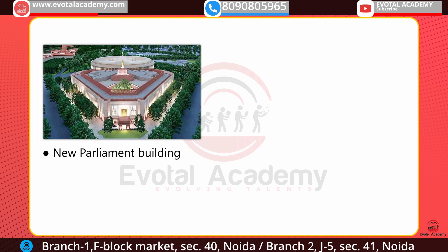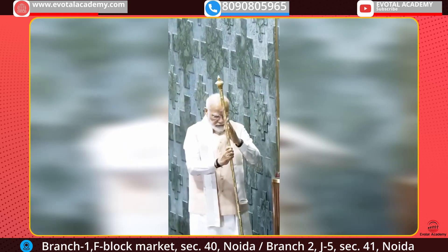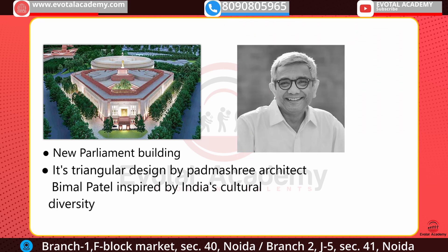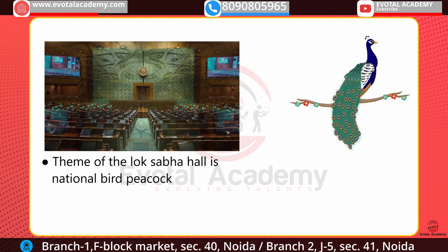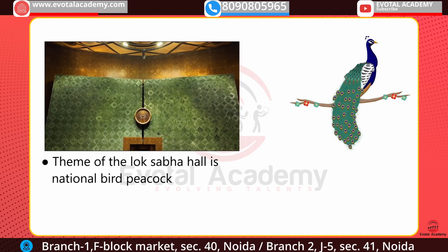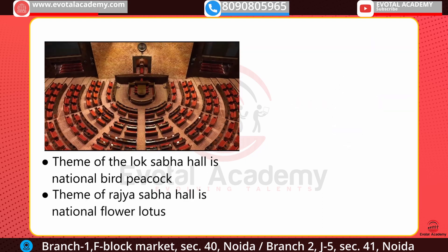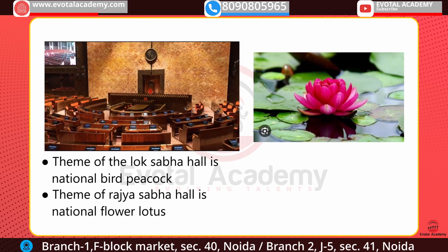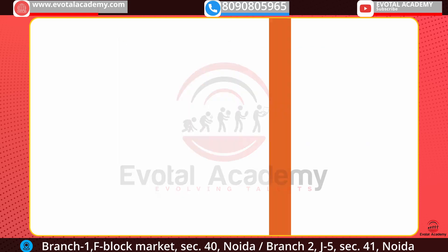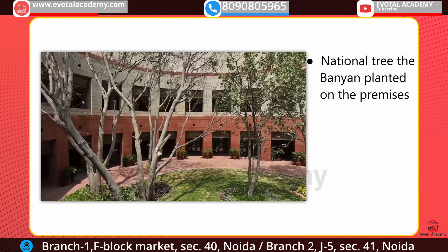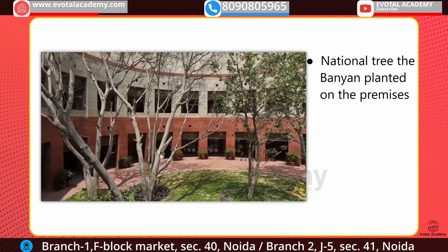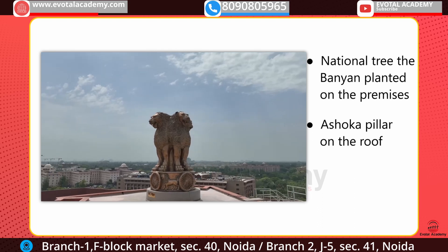The first news of June is regarding our new parliament building, which has been inaugurated. Its architect is Padma Shri Bimal Patel. Being inspired by India's cultural diversity, its design is kept as triangular. The theme of Lok Sabha is the peacock, which is our national bird, and the theme of Rajya Sabha is the lotus, which is our national flower. The national tree banyan has been planted on its premises, and on the roof a Ashoka pillar has been installed.